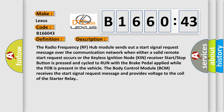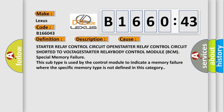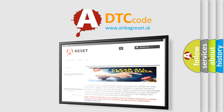Here is a short description of this DTC code. The radio frequency RF hub module sends out a start signal request message over the communication network when either a valid remote start request occurs, or the keyless ignition node receiver start-stop button is pressed and cycled to run with the brake pedal applied while the FOB is present in the vehicle. The body control module BCM receives the start signal request message and provides voltage to the coil of the starter relay. This diagnostic error occurs most often in these cases: starter relay control circuit open, starter relay control circuit shorted to voltage, starter relay body control module BCM special memory failure — where specific memory type is not defined in this category.